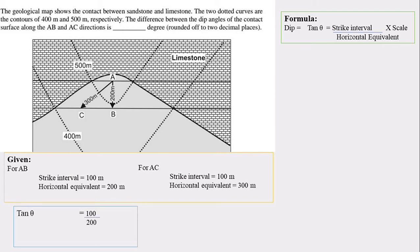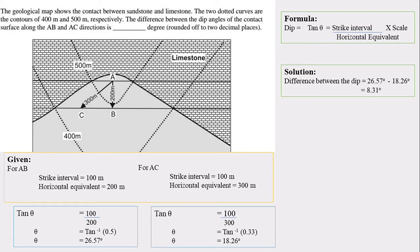And if you substitute the value, we will get tan theta is equal to 100 by 200. Theta will be tan inverse of 0.5. So theta will be 26.57 degrees. And for AC, if you do the same thing, we will get the dip that is 18.26. So now itself you can cross check that AB's dip is 26.57, which is higher than the AC dip that is 18.26. So the true dip is always more than the apparent dip. And what they had asked is they were asked for the difference. So we have to subtract the values. And what we get is 8.31. So the answer, the difference in dip is 8.31 degrees. Is that clear?